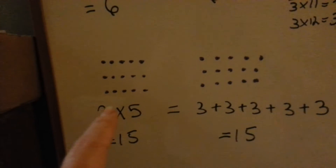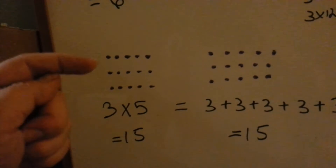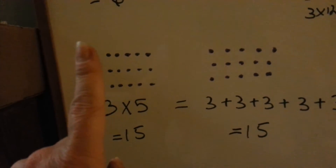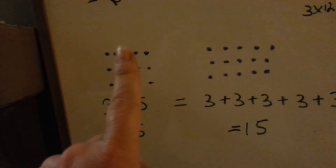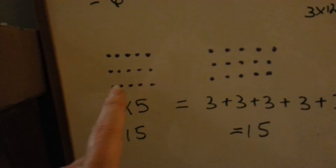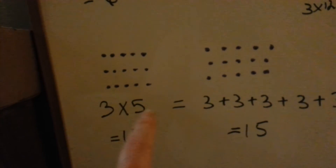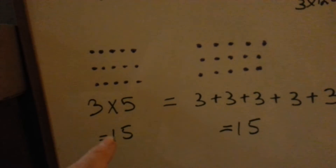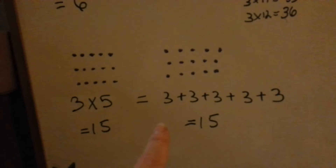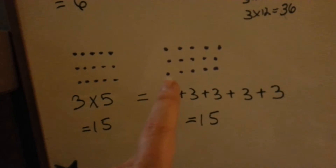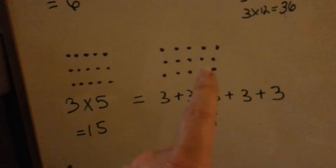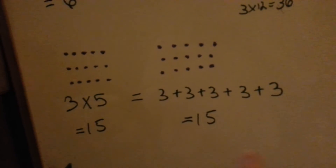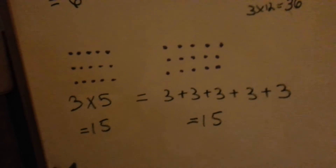Let's look at this one: 3 times 5. You can say we have a 3, 3, 3, 3, and 3 — you have a 3 five times, or a 5 three times. That equals 15. It's the same thing as saying you're going to add 3 plus 3 plus 3 plus 3 plus 3. There are five 3's here, and that also equals 15.